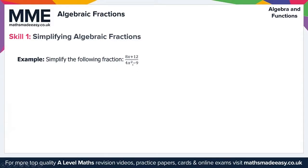To simplify an algebraic fraction of this type, we need to find a factor in the numerator and a factor in the denominator that are common to both, so that we can cancel them. We start by factorizing the numerator: 8x plus 12. We can factor a 4 out, giving us 4 times (2x plus 3). So that's the numerator factorized.